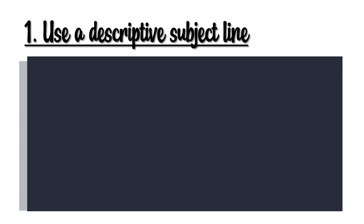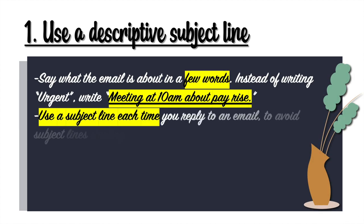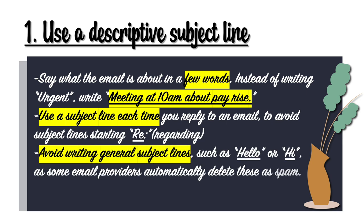Number one, use a descriptive subject line. Say what the email is about in a few words. Instead of writing 'urgent', write 'meeting at 10 a.m. about pay rise'. Use a subject line each time you reply to an email to avoid subject lines starting with 'regarding'. Avoid starting with general subject lines such as 'hello' or 'hi', as some email providers automatically delete these as spam.